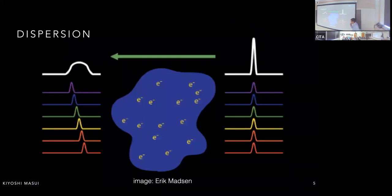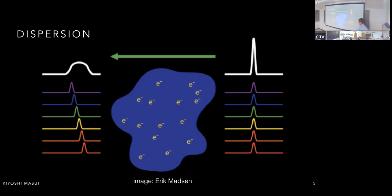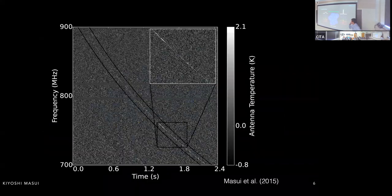Perhaps the defining feature of fast radio bursts is dispersion. We observe these broadband bursts across many wavelengths, but not all those wavelengths travel at the same speed through the universe. The universe is filled with very diffuse plasma, which has a wavelength-dependent refractive index. So the bluer, shorter wavelengths travel through the medium slightly faster than the longer wavelengths and arrive at our telescope a bit earlier.